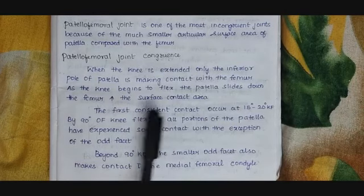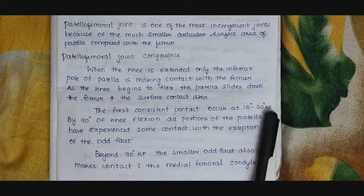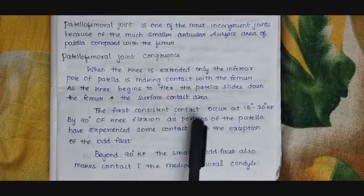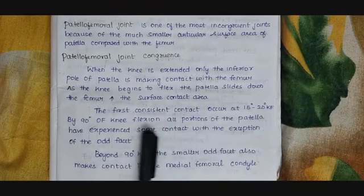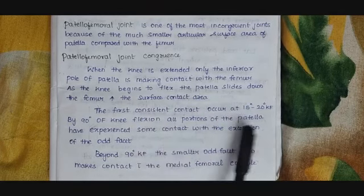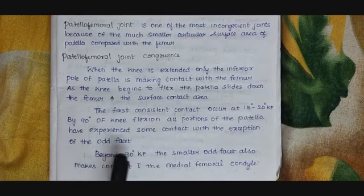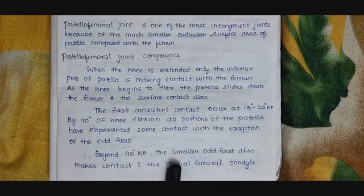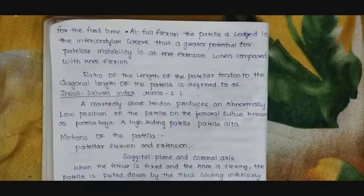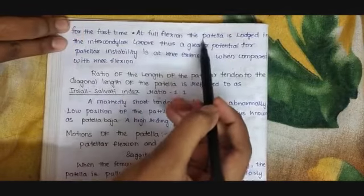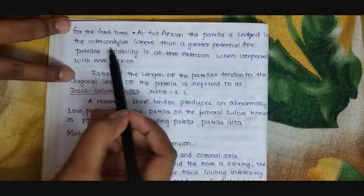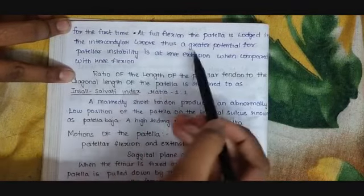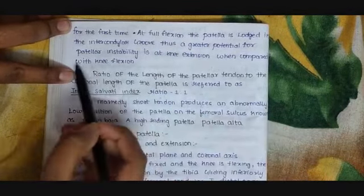The first consistent contact occurs at 15 to 20 degrees of knee flexion. By 90 degrees of knee flexion, all portions of the patella have experienced some contact with the femoral sulcus, with the exception of the odd facet. Beyond 90 degrees of knee flexion, the odd facet also makes contact with the medial femoral condyle. At full flexion, the patella is lodged in the intercondylar groove. Thus, a greater potential for patellar instability is at knee extension when compared with knee flexion.